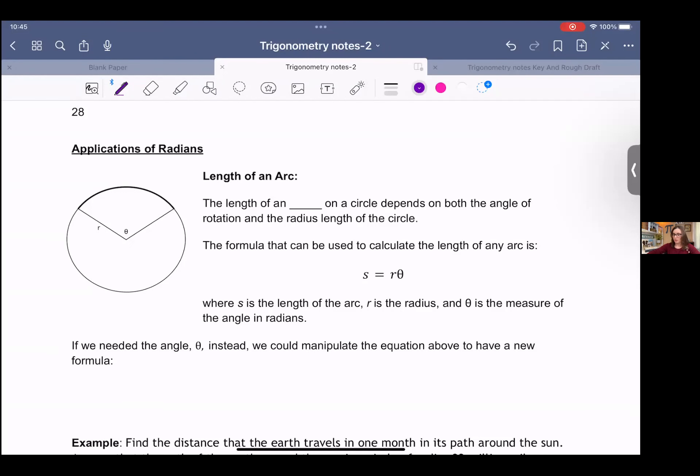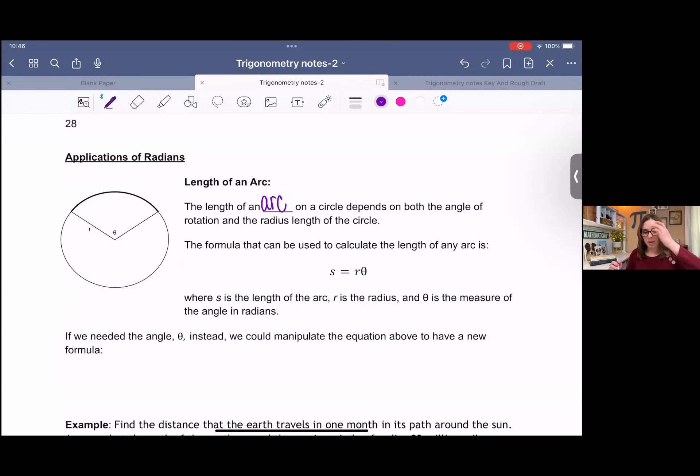One of those applications is the length of an arc. An arc is what you see here, this little segment. The length of an arc on a circle depends on both the angle of rotation and the radius of the circle. That gives us this formula where s equals r times theta, where s is the length of the arc, r is the radius, and theta is the measure of the angle in radians.